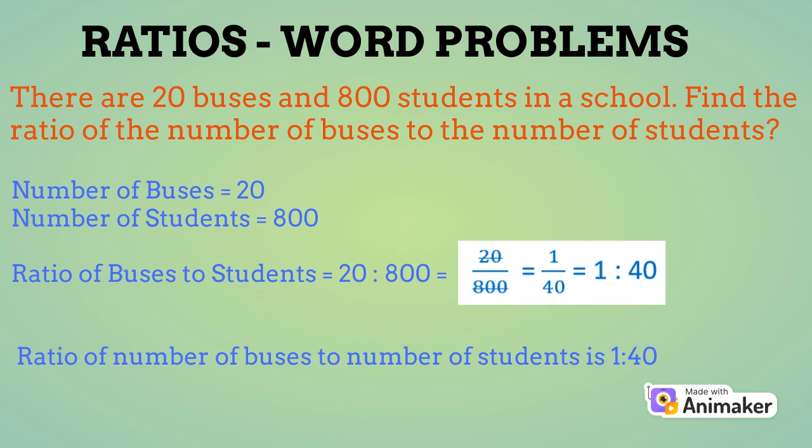So, the ratio of number of buses to number of students will be 20 is to 800. Upon simplification, you will get the answer as 1 is to 40.